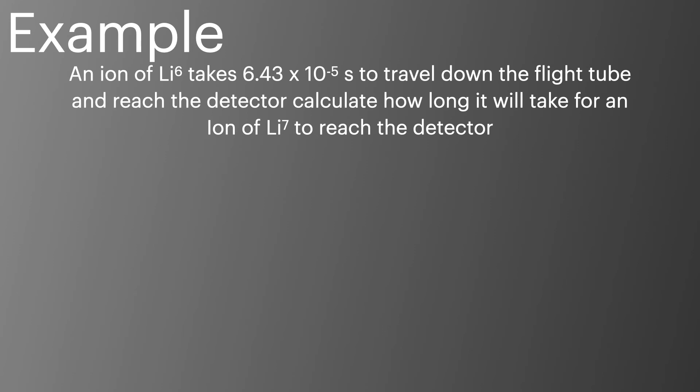To look at this example then, an ion of lithium 6 takes 6.43 times 10 to the minus 5 seconds to travel down the flight tube and we're asked to calculate how long it'll take an ion of lithium 7 to reach the same detector. We'll start off by bringing that equation through from before. I've left the masses in here rather than the relative atomic masses as it's easier to learn and remember. We'll then rearrange that equation to have t squared as a subject and then we'll add in a square root to simplify things even further.